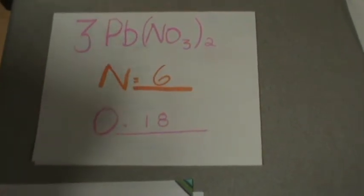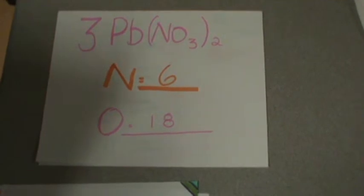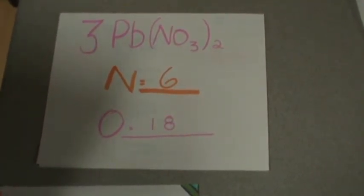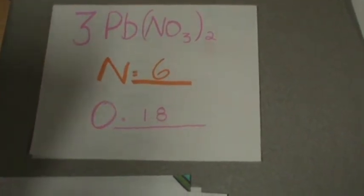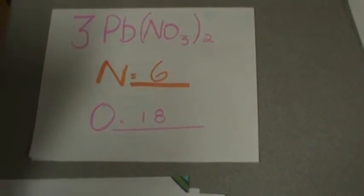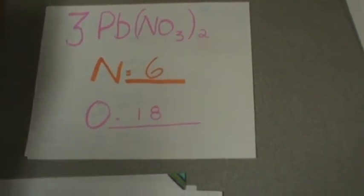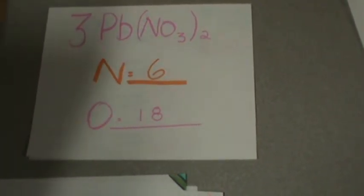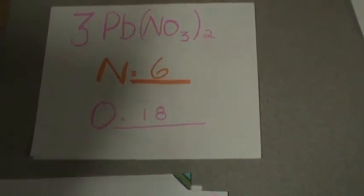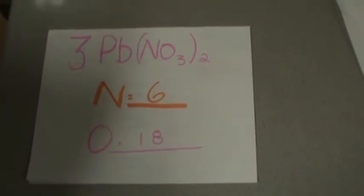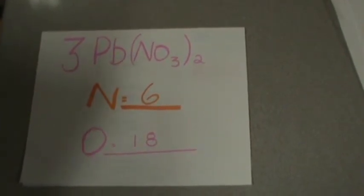So you will first say that it has 1 atom of nitrogen and 3 atoms of oxygen inside the bracket. Then you would do 1 times 2 for nitrogen and 3 times 2 for oxygen because the subscript 2 is outside the bracket which means you multiply everything in the brackets by 2.